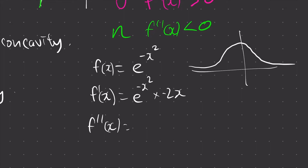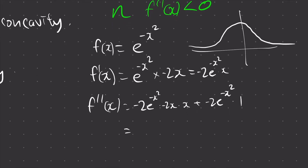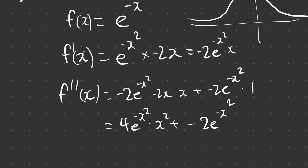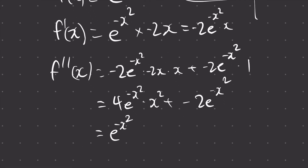So we know the first derivative is e^(-x²) times negative 2x. Let me rewrite this so it looks nicer — so it's going to be e^(-x²) times x like this. Do you see how we have a product rule here? We need to use product rule. So differentiating the first thing, it's going to be negative 2e^(-x²) times negative 2x again, and then times x. Plus e^(-x²) times 1. So we simplify this: it's going to be 4e^(-x²) times x² plus negative 2e^(-x²). We can factor out e^(-x²), giving us e^(-x²) times (4x² minus 2).